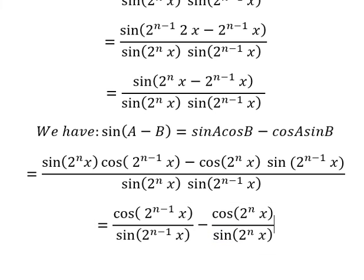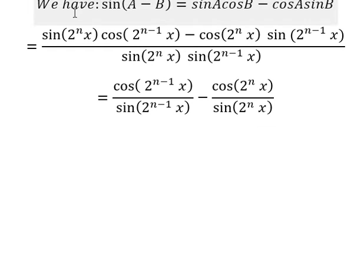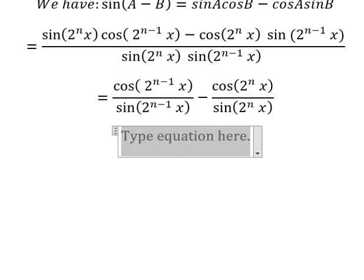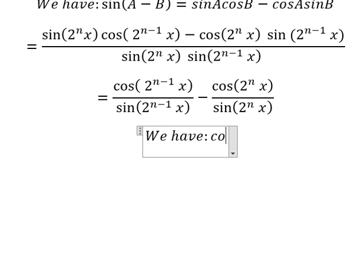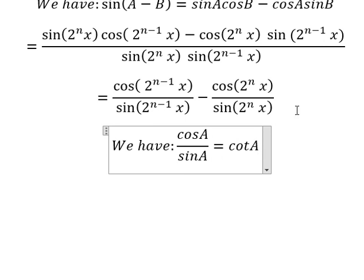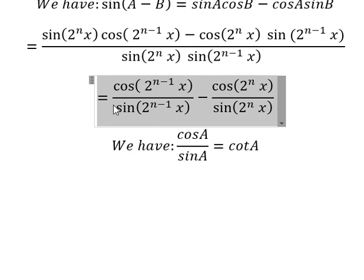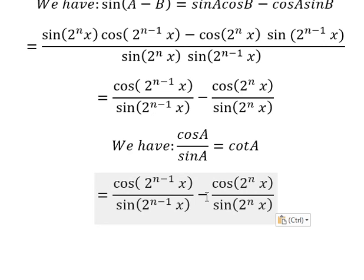So we know that cosine A over sine A equals cotangent A. Now we need to transform this one into cotangent.